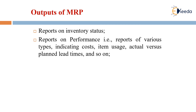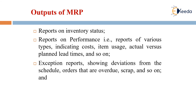Reports on performance include reports of various types indicating costs, item usage, actual versus planned lead times, and so on. Our final output, whatever we are getting, can be detailed out in these performance reports.